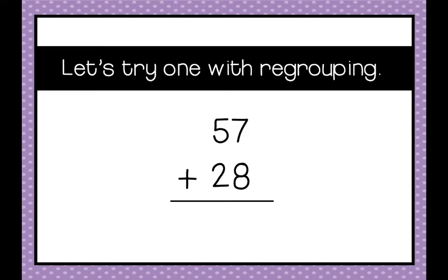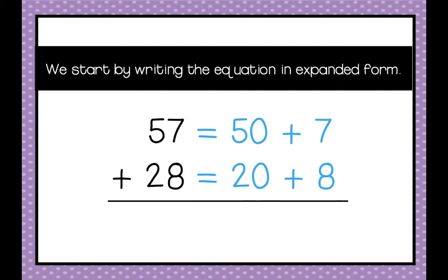Let's try one with regrouping. So we start by writing the equation in the expanded form. 50 plus 7 and 20 plus 8.